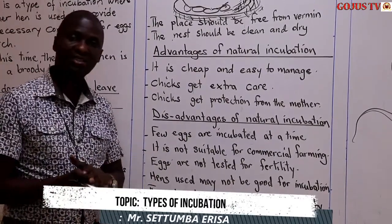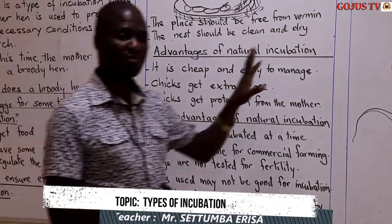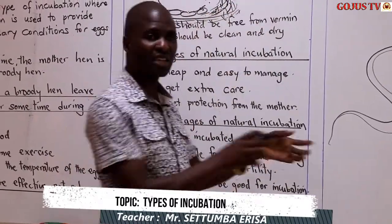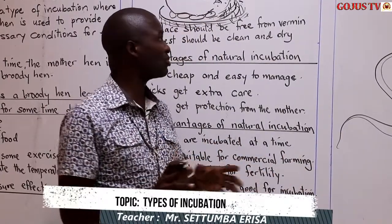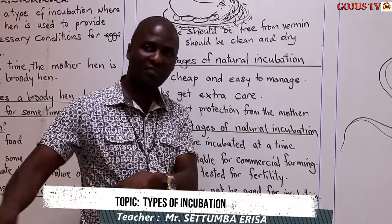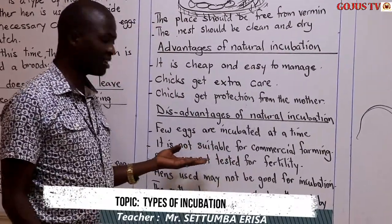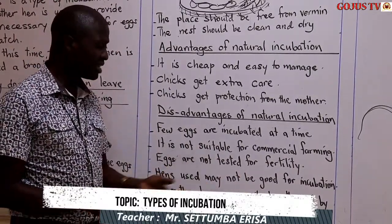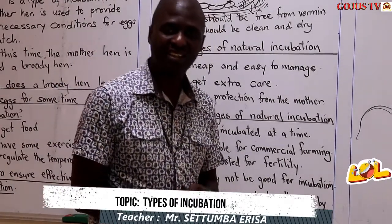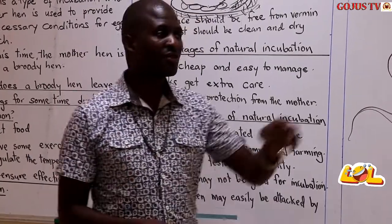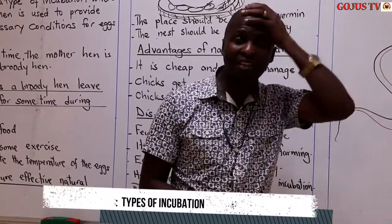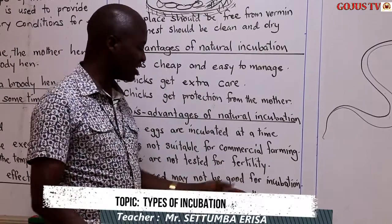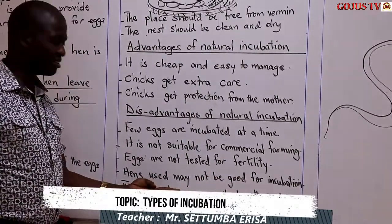Number three, eggs are not tested for fertility. When we go to commercial farming, there are machines that detect whether the eggs are fertilized. So when you put eggs in an incubator, you are at least 95% sure that they will hatch, apart from other factors. But here with the mother hen, we may not employ testing for fertility. Number four, hens used may not be good at incubation. There are some hens which are not attentive — instead of sitting on the eggs, they waste a lot of time looking for food out there and even forget about the eggs. So when the eggs stay for long and temperatures have changed, they may not hatch. Some chickens are simply not good at incubation.